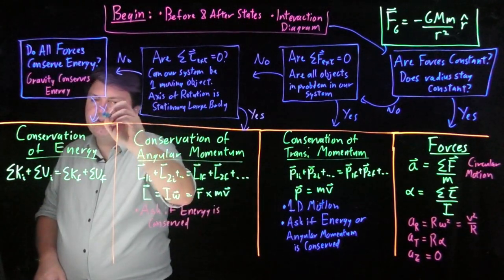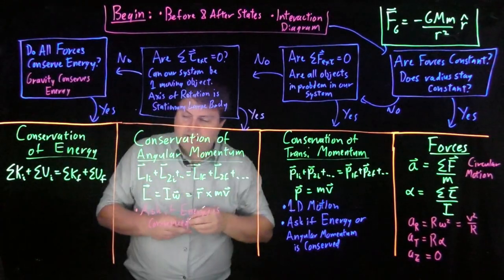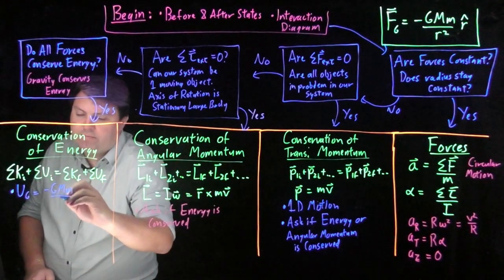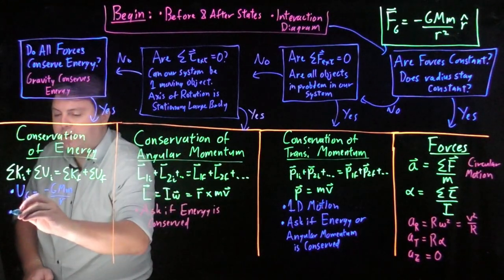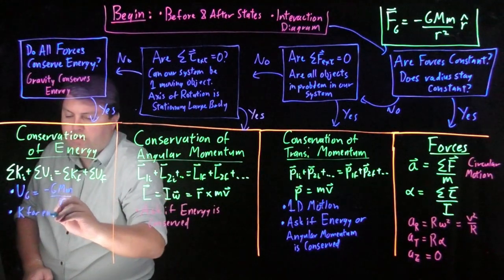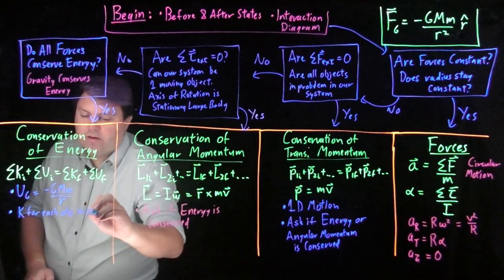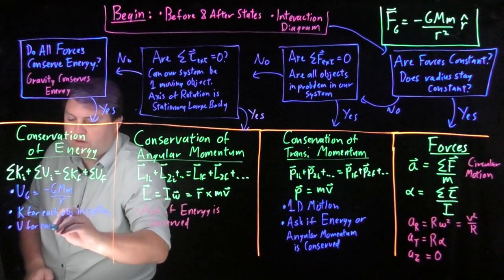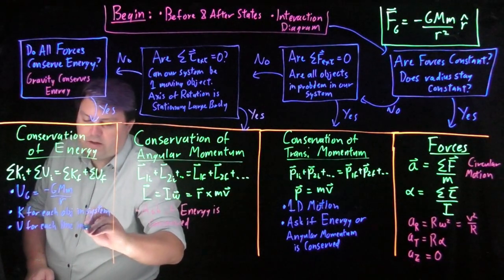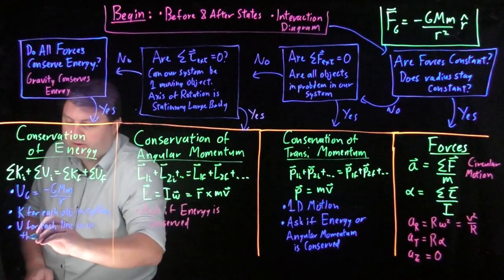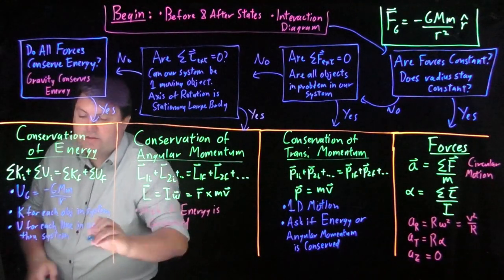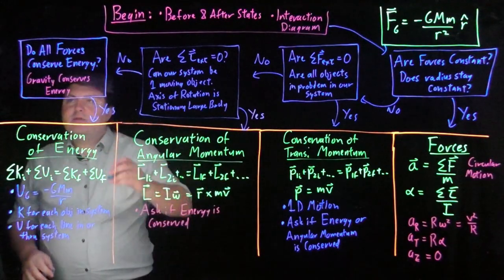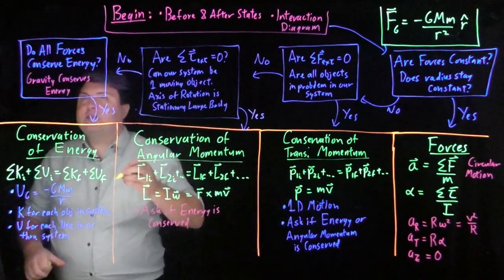So if we have this conservation of energy, if we say yes to here, just a reminder that our potential energy from gravity is negative GMM over R. And we have a K for each object in the system. And we have a U for each line in or through the system. Each interaction line that we draw in our interaction diagram will be like this.